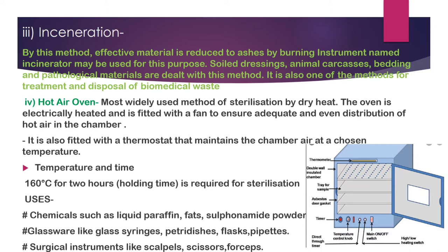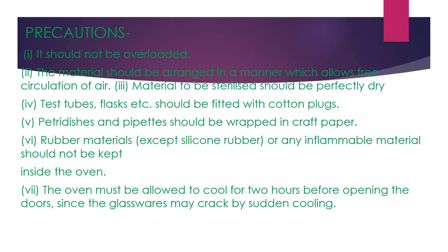Uses of the hot air oven include chemicals like liquid paraffin, fats, and sulfonamide powder; glassware like glass syringes, petri dishes, and pipettes; and surgical instruments like scalpels, scissors, and forceps. Precautions: it should not be overloaded, materials should be arranged properly so air is evenly circulated, and the material to be sterilized must be perfectly dry.